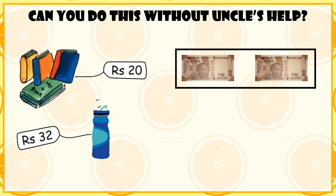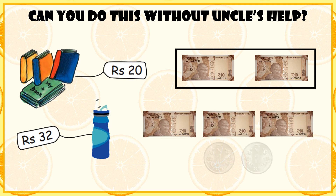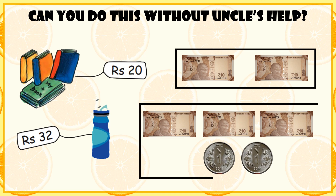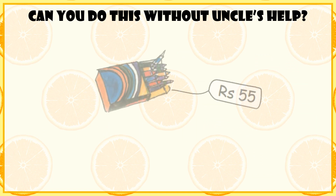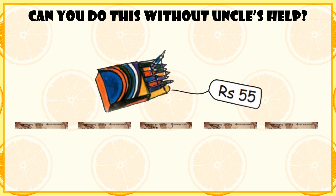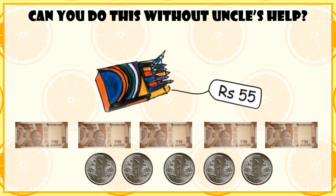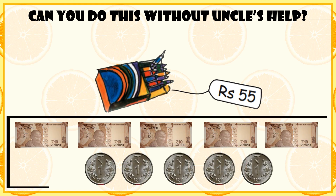Next is a bottle costing 32 rupees. Three 10-rupee notes and two 1-rupee coins make 32 rupees. Colors cost 55 rupees. Five 10-rupee notes and five 1-rupee coins make 55 rupees.